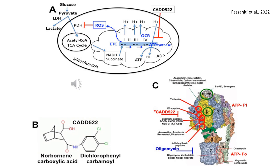Nature-derived scaffolds often exhibit strong biological activity, and fusion of these structures enhances specificity and effectiveness. CADD522 was identified as a RUNX2 inhibitor, a key transcription factor involved in cancer progression. However, our research uncovered another crucial function: it inhibits ATP synthase, linking it to metabolic disruption in cancer cells.